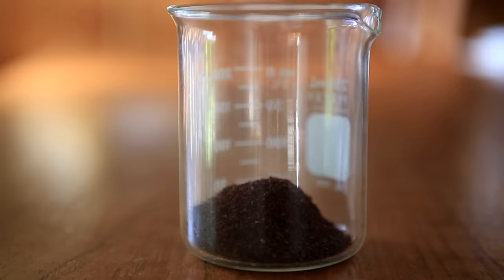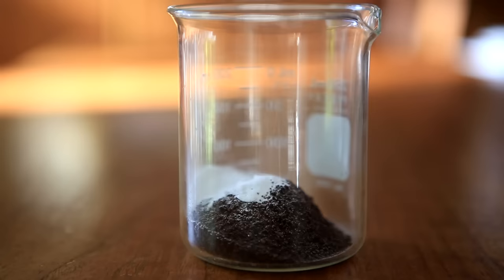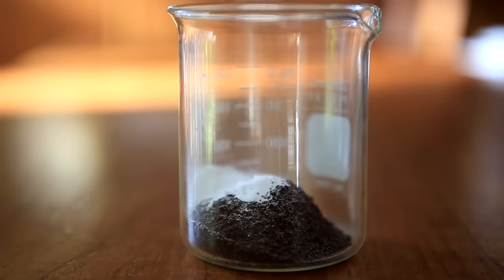I started off by adding 10 grams of ground coffee. Then on top of the coffee I poured on about 4 grams of sodium carbonate. The sodium carbonate will react with a lot of different molecules in the coffee and make them more water soluble. Then 60 milliliters of distilled water is poured in.